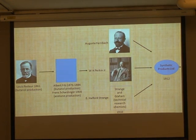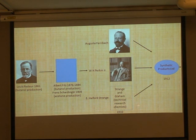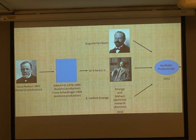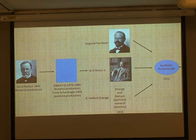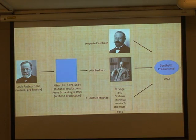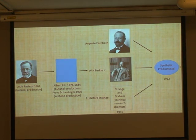They discovered this process, and in 1910 a consortium was formed by Strange and Grange, a technical research chemist based in City Road in London. Edward Halford Strange enlisted W.H. Perkin Jr. - the son of Perkin who discovered the dyestuff mauve - who was a professor at Manchester at the time, and they formed a consortium to produce synthetic rubber. They discovered the process for producing synthetic rubber from butadiene by somebody leaving stuff in flasks when they went on holiday, and when they came back it had turned to rubber.